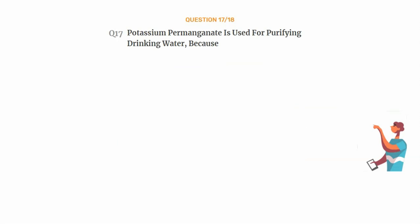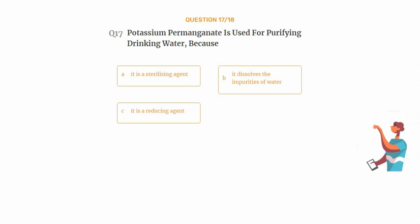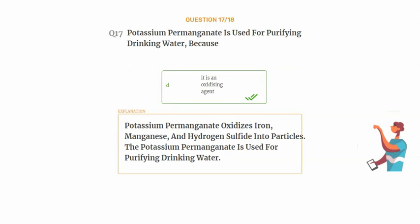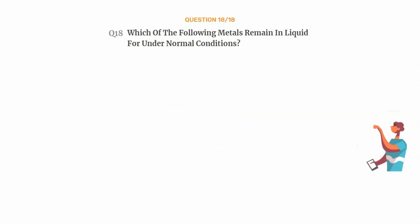Question number seventeen: potassium permanganate is used for purifying drinking water because — option A: it is a sterilizing agent, option B: it dissolves the impurities of water, option C: it is a reducing agent, option D: it is an oxidizing agent. The correct answer is option D: it is an oxidizing agent. Potassium permanganate oxidizes iron, manganese, and hydrogen sulfide into particles, which is why it is used for purifying drinking water.